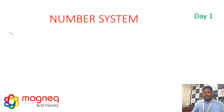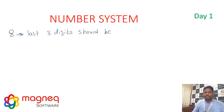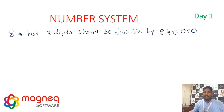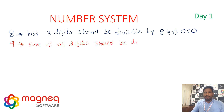Divisibility rule for 8: the last 3 digits should be divisible by 8, or the number ends with 3 zeros. Rule for 9: the sum of all digits should be divisible by 9.